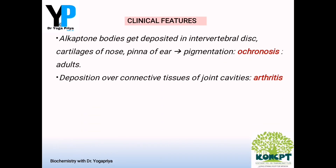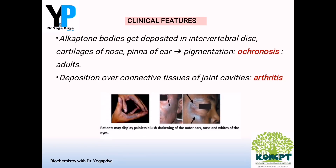Other clinical features include deposition of alkapton bodies in the intervertebral disc and also in the cartilages of the nose and pinna of the ear, resulting in pigmentation called ochronosis, which is the most common manifestation in adults. These alkapton bodies also get deposited over the connective tissue of joint cavities, resulting in arthritis. In this picture you can see pigmentation over the fingers, the outer side of the ears, and in the eyes. This pigmentation can also occur in the sclera of the eyes. A peculiar feature is that there is no mental retardation, and the X-ray feature shows a parrot beak appearance.